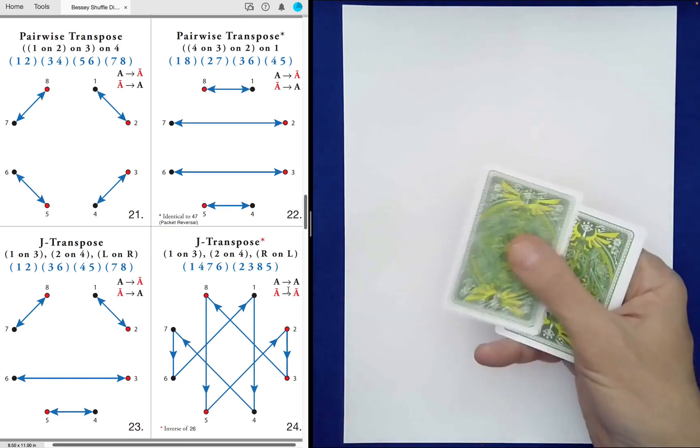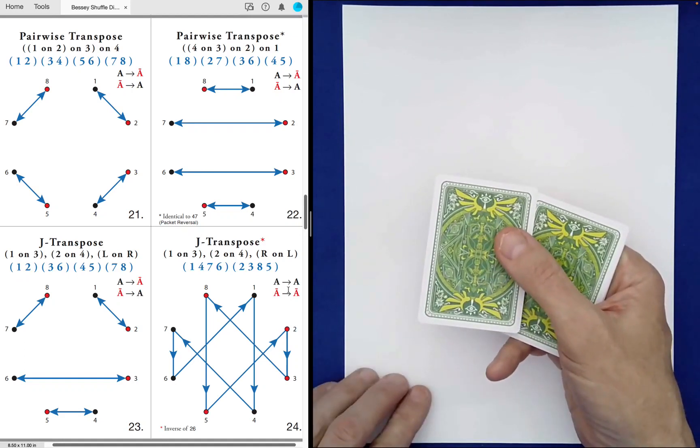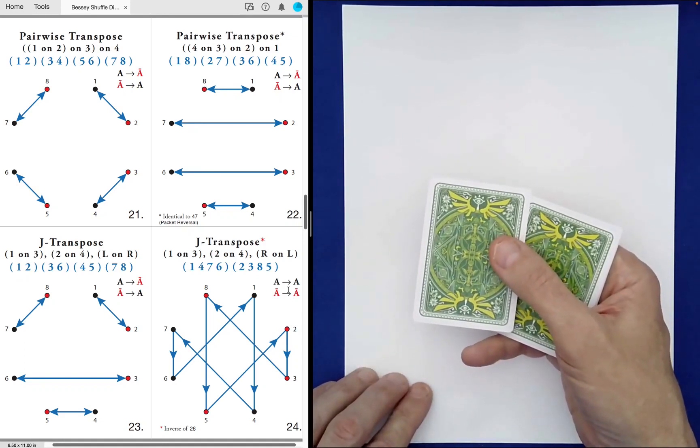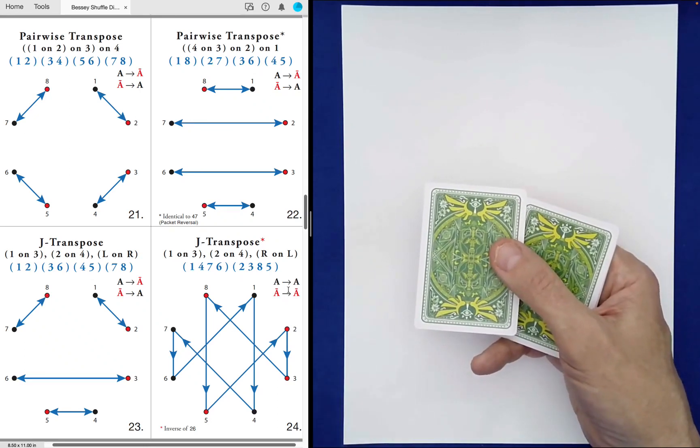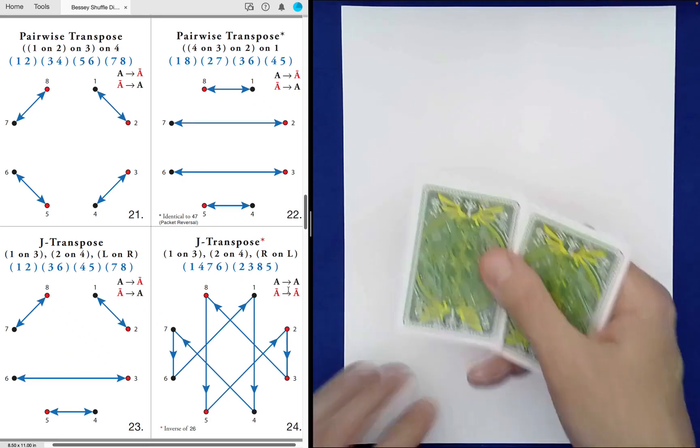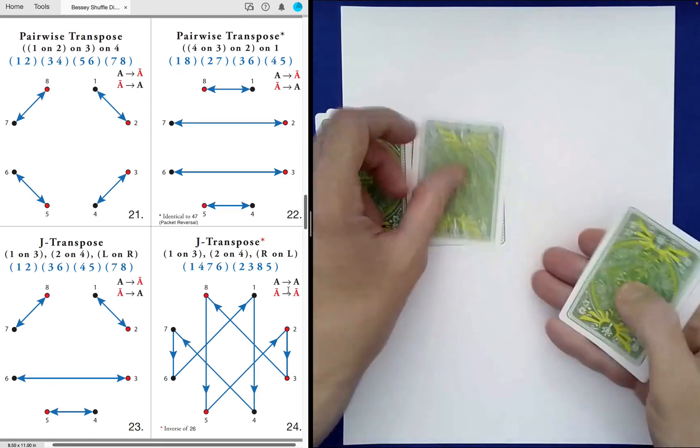So, maybe we'll just do a couple just to show you. Maybe we'll do 24, which doesn't invert it, and then we'll do one that does. So 24. So, this is where you deal out into, there's just one, two, one, two, and four piles.